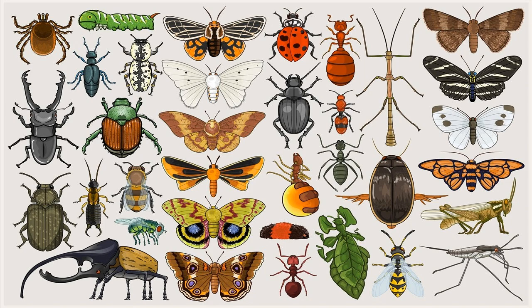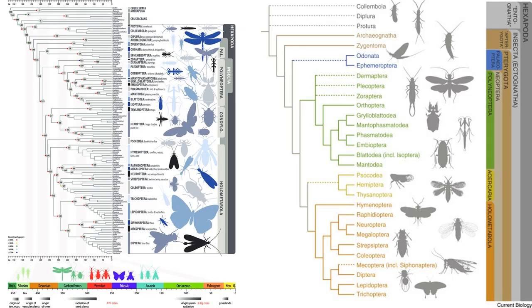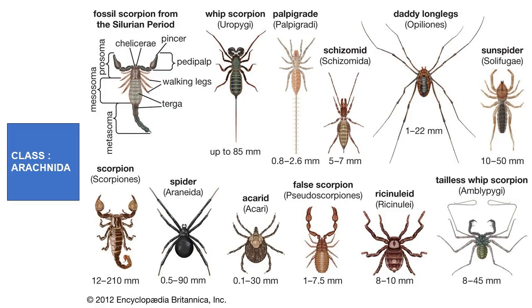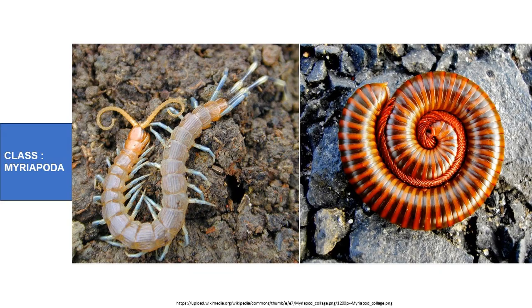Let's start with the phylogeny of insects. The phylogeny of insects traces their evolutionary history and relationships among different groups. Insects belong to the phylum Arthropoda, which also includes arachnids like spiders and scorpions, myriapods like centipedes and millipedes, and crustaceans — crabs, lobsters, and shrimp.